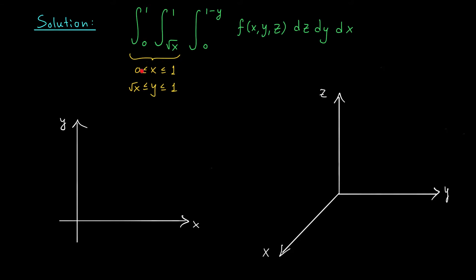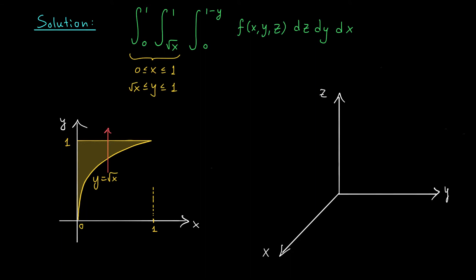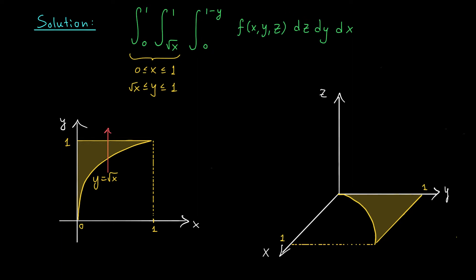x is going from 0 to 1, and y is going from √x to 1. The curve y = √x looks something like this, and y = 1 is a horizontal line above it. Since √x is the lower bound and 1 is the upper bound, this curved region between them is our domain. Translating this into the xy-plane in R3, we have the curve y = √x, the line y = 1, and the shaded region between them — that is the domain of integration projected down into the xy-plane.